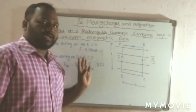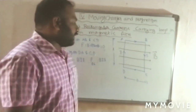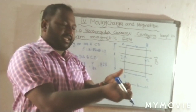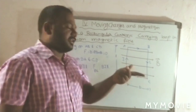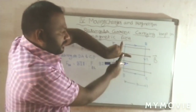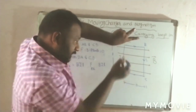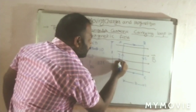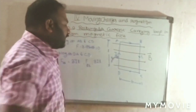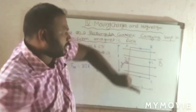The direction of the force is given by Fleming's left-hand rule, which I already explained in the last session. The thumb indicates force direction, the forefinger indicates the field direction, and the middle finger indicates the current direction. Applying this: the forefinger points the field, the middle finger points the current direction — the thumb points into the board. So the force acting on conductor AD is directed into the board.